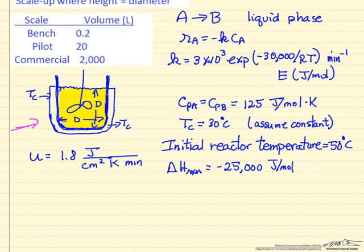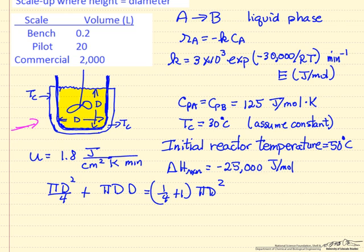We're going to assume our heat transfer area is just the region connected by the jacket. Assuming this is a circular tank, basically the area of the bottom is π D² / 4, plus the area of the sides completely, which would be π D times the height. This adds up to (1/4 + 1) π D². So this is going to be our area for heat transfer.